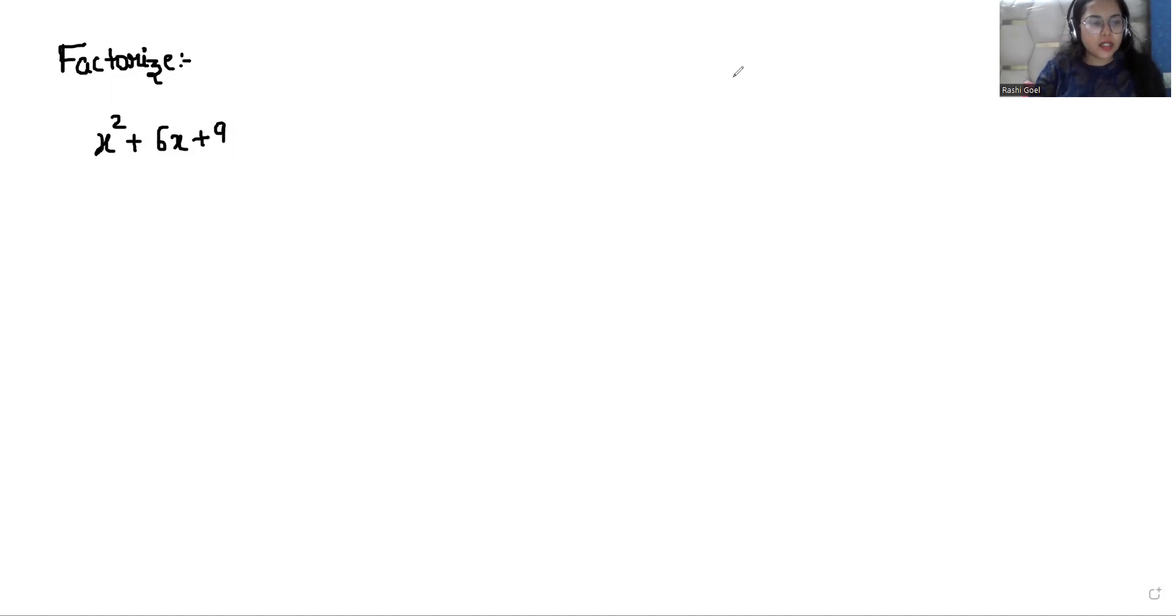As we can see, this is a quadratic equation. We are going to take the constant term, that is 9, and multiply it with the coefficient of x^2, that is 1. So 9 times 1 is 9.